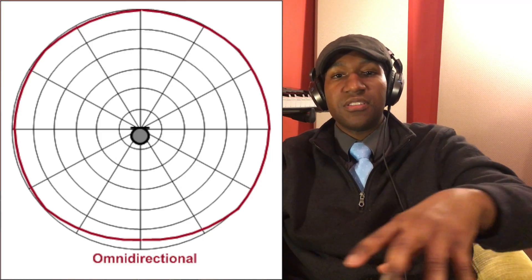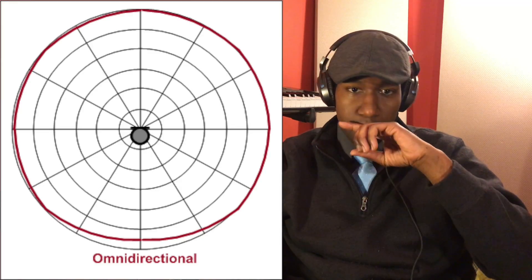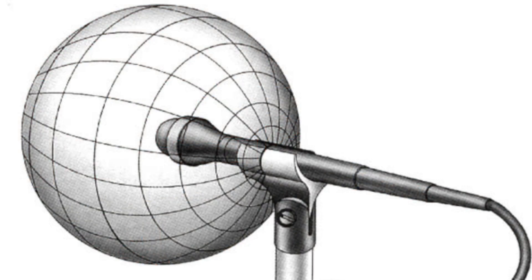Just breaking it down simply: omnidirectional picks up everything. If you look at it on a graph, it looks like a giant circle — I'll throw one up on the screen here. There you can see the shape on a two-dimensional graph. But if you look at it on a three-dimensional basis, it's not just a circle — that microphone picks up sound in a spherical pattern, equally from all directions.